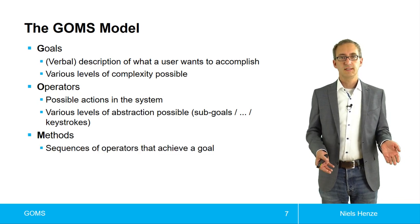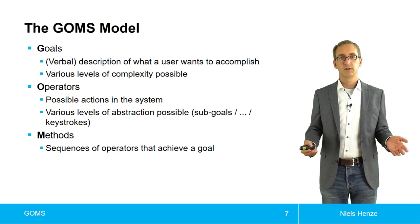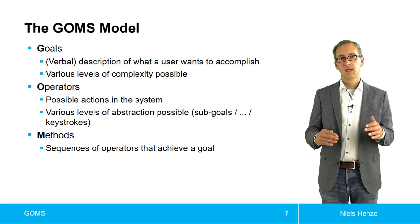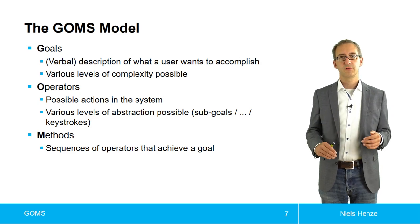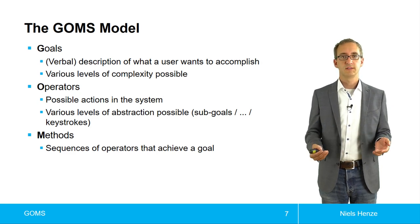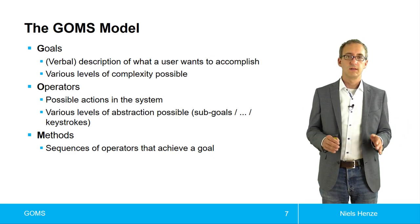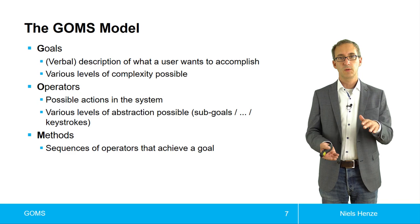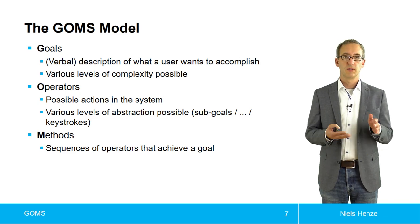Then we have the methods. And these are sequences of operators to achieve a goal. And we saw that. But in this cash machine example, there was a sequence of things I have to do in order to fulfill the goal. And things like entering a pin, getting cash, these things. And the collection of these things, these operators, this is called a method.